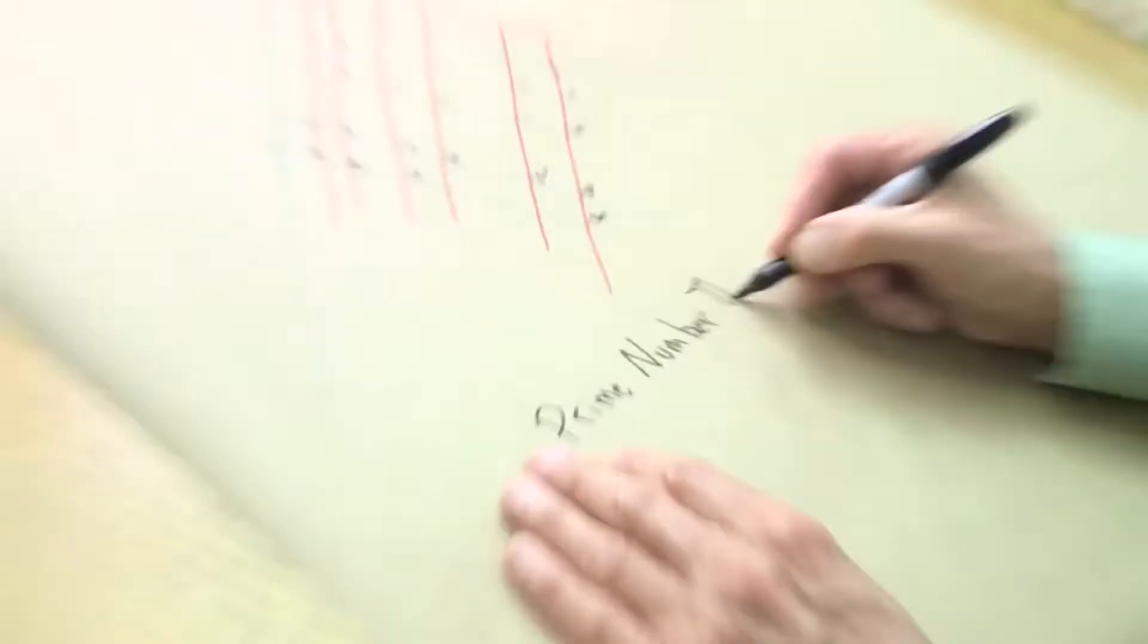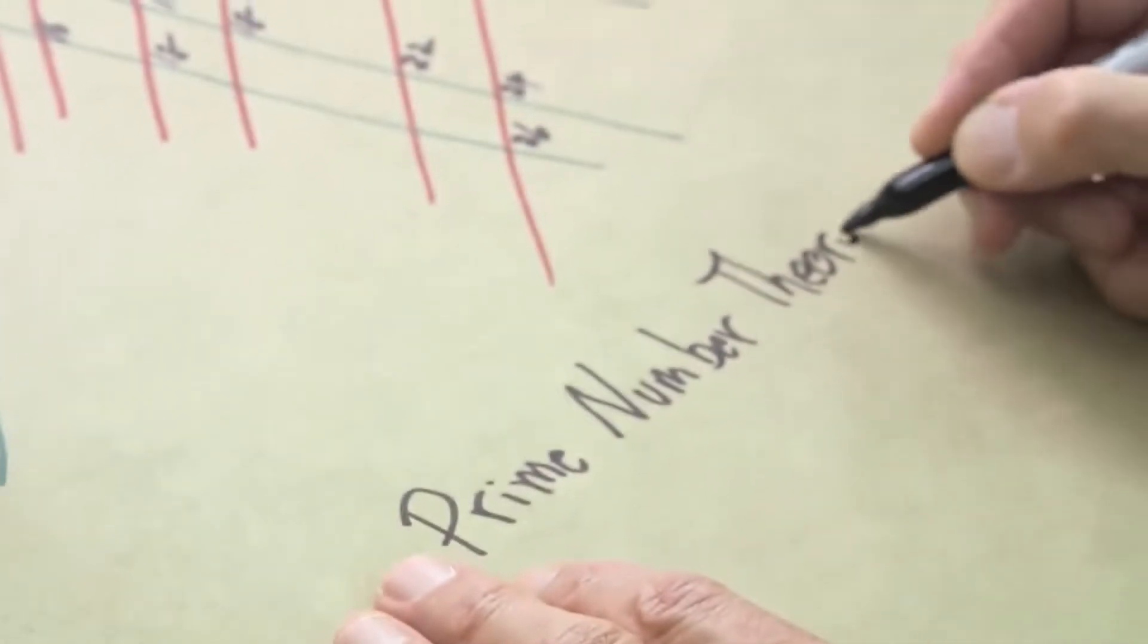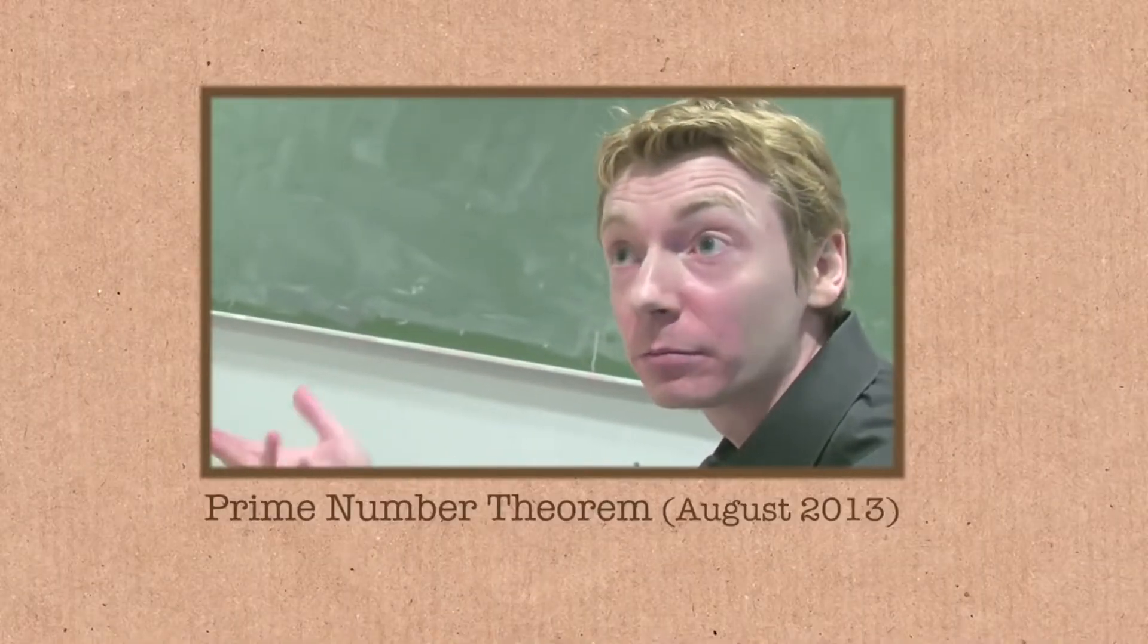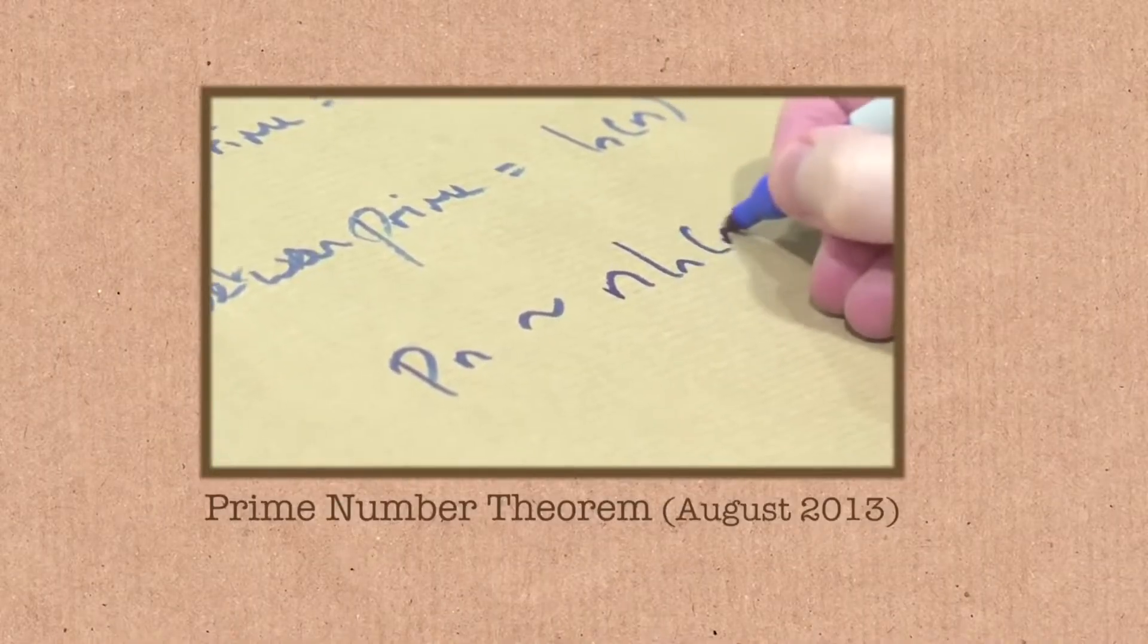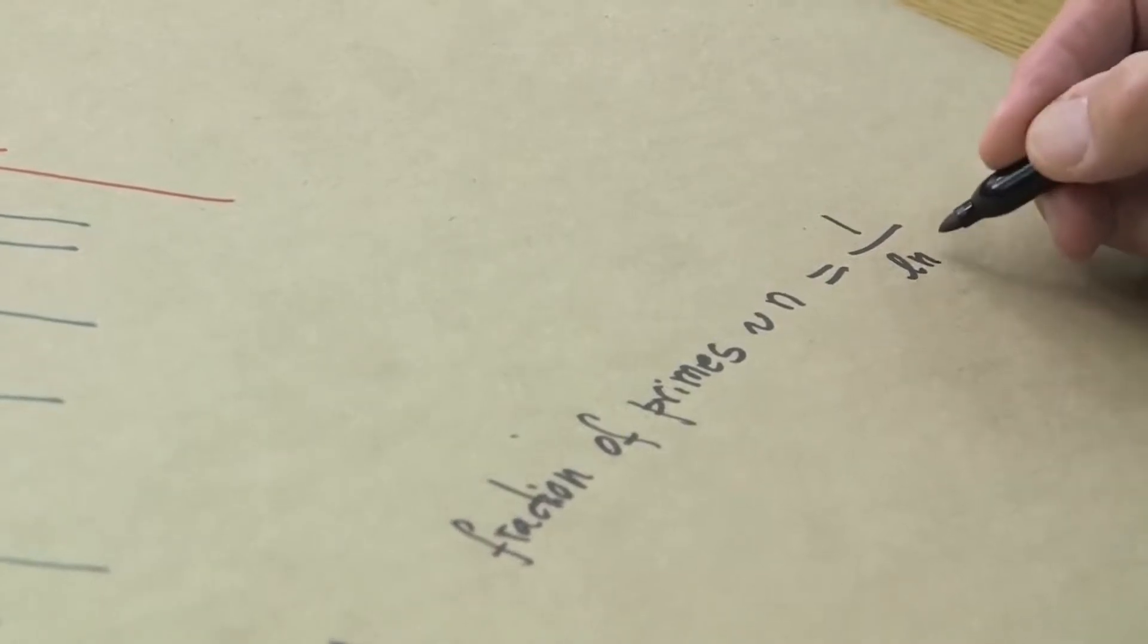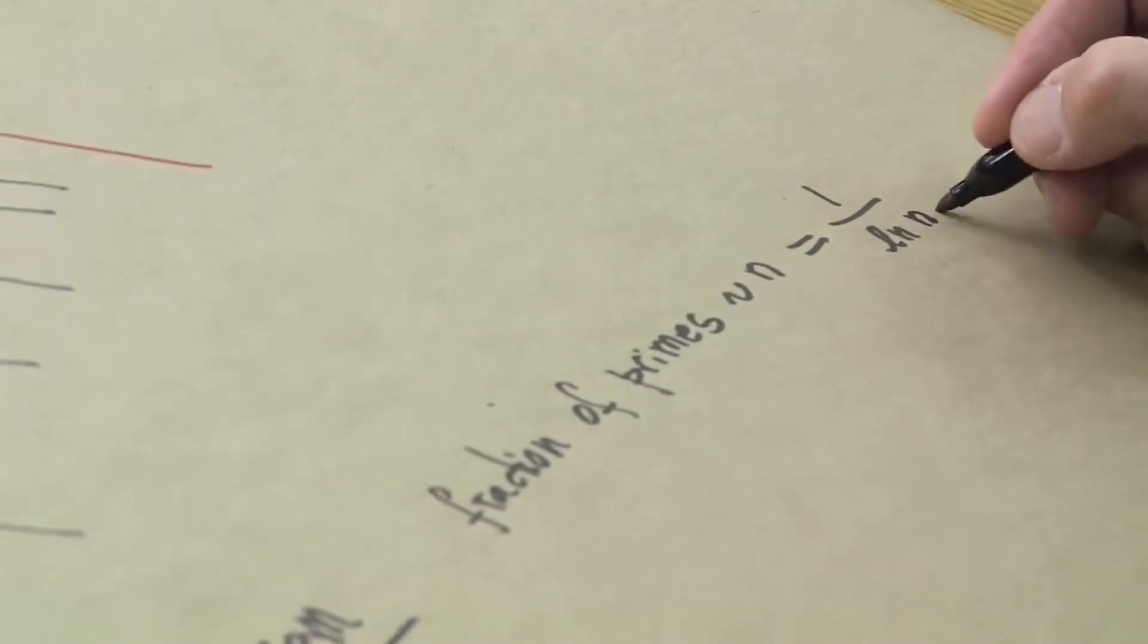One of the most famous theorems in number theory is the prime number theorem. And it says that the density of the primes around n, so the chance of a number near n being prime, is n divided by the natural logarithm of n. That's the prime number theorem. I'm not going to try to prove it or justify it, but it's true.